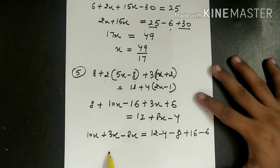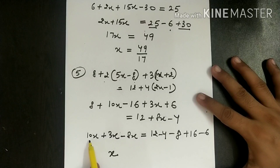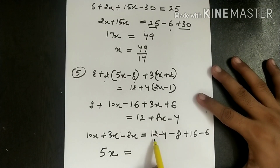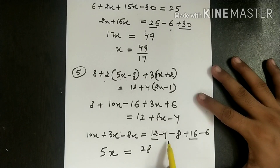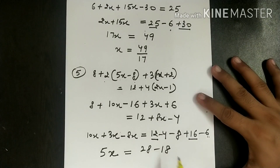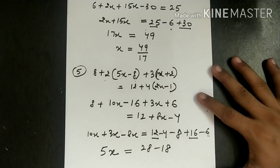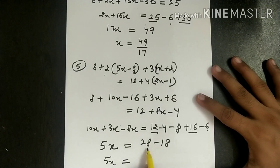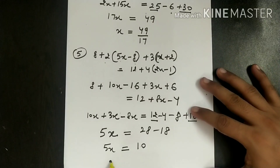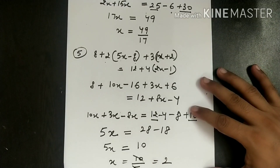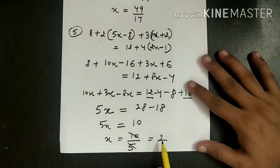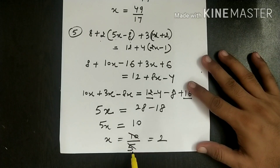Solving: 10 + 3 = 13, minus 8 = 5x. On the right: 12 + 16 = 28 positive, and 4 + 8 + 6 = 18 negative. So 5x = 28 - 18 = 10. Therefore x = 10 ÷ 5 = 2. The value of x is 2.